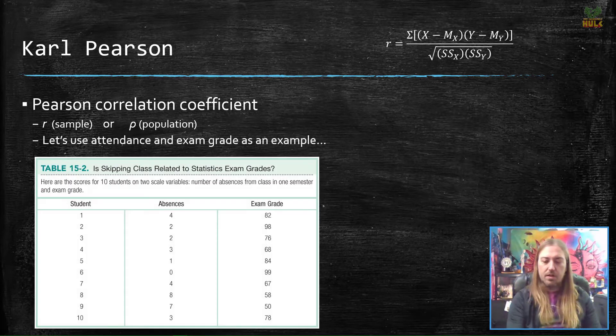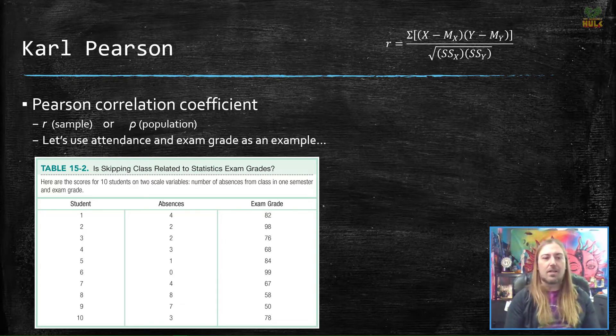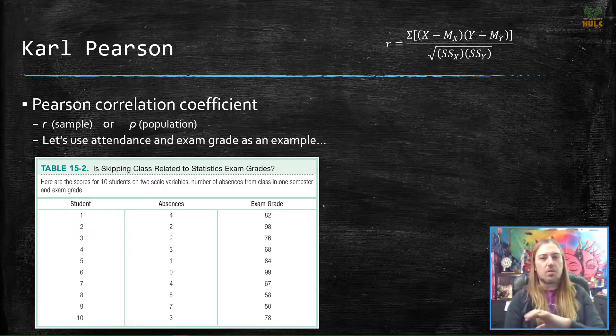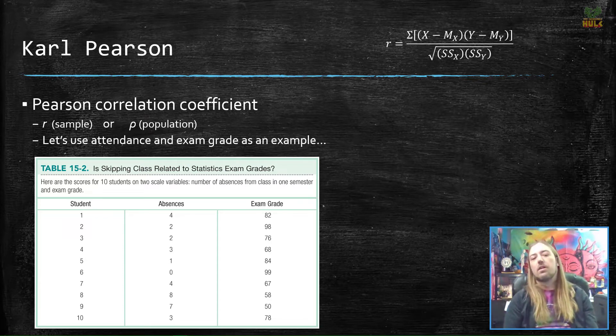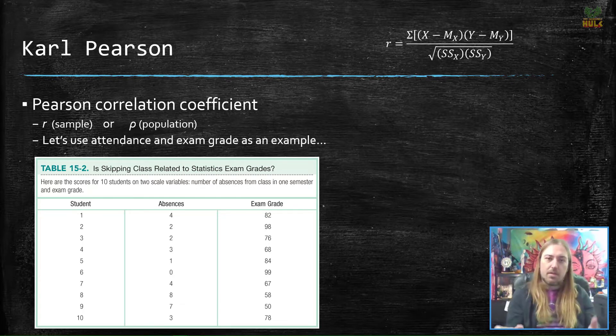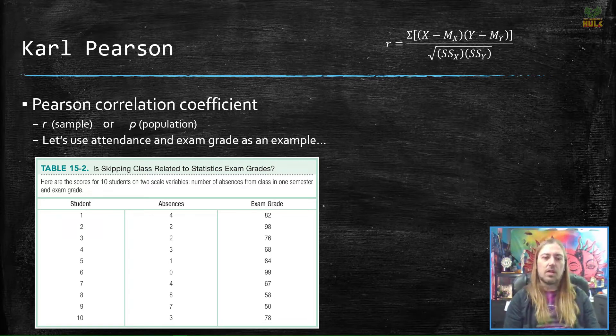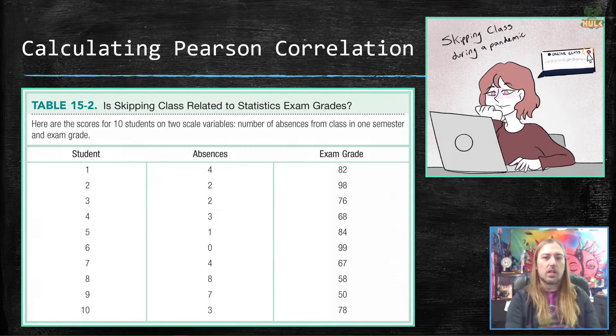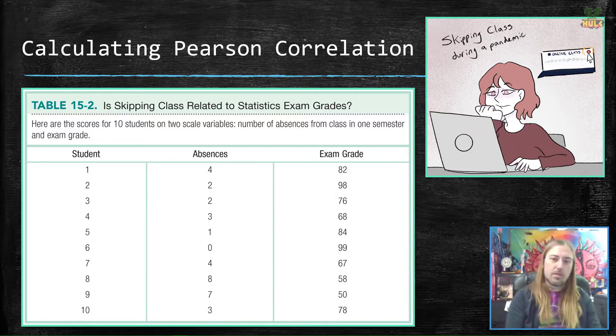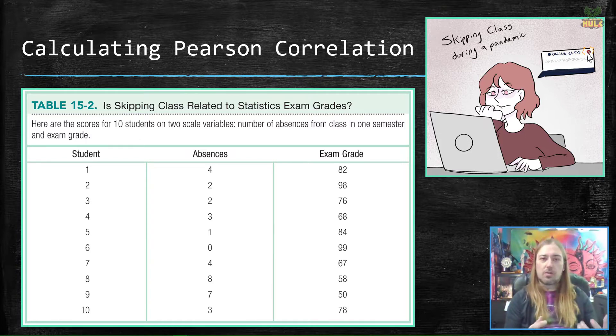So let's look at some data that comes straight from the textbook. Ask whether or not skipping class, essentially attendance and exam grades are related. We have these data here. Notice the first column is simply identifying a student by number instead of name because data are anonymous. That's not a column we're going to analyze in any way because it's arbitrary. Instead the data we're interested in is that column in the middle, absences, where we see all the absences across an entire semester for each of these ten individual students, and then the column on the right, exam grade. These two columns are the data we want to see if they are in fact correlated.